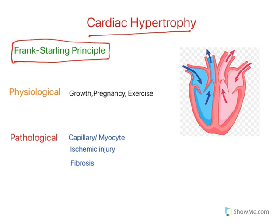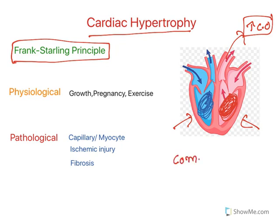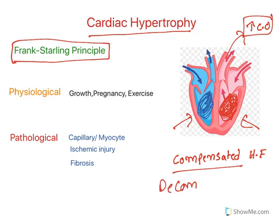According to the Frank-Starling principle, when excess blood is congested inside the heart, even though heart failure is present, with a little contraction more blood comes out, because there is a lot of blood accumulated inside. This increases cardiac output, and this condition is called compensated heart failure — cardiac output is compensated because of the Frank-Starling principle. However, this cannot happen all the time. Due to excessive ventricular pressure from the blood, heart muscle damage occurs, resulting in decompensated heart failure, where the heart can no longer increase cardiac output.